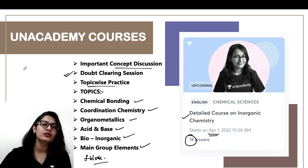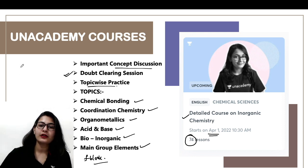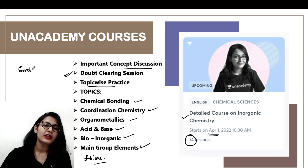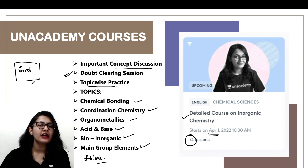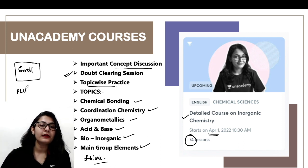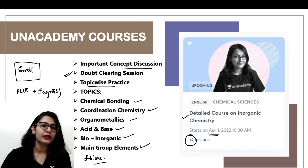You can visit the Unacademy website, search in my profile, and enroll in the Plus courses to get timely notifications of all the classes. If you want to join Unacademy Plus, you can use the code JAGRITI-S and you're going to get a 10% discount with this.